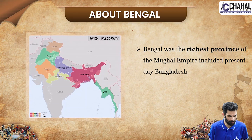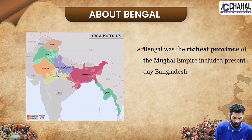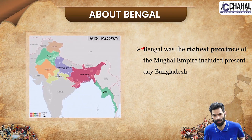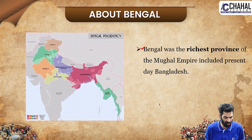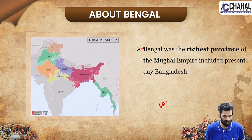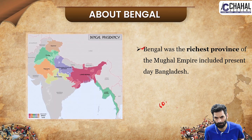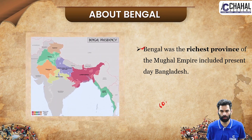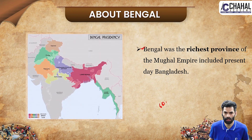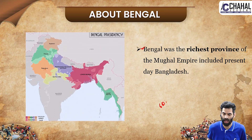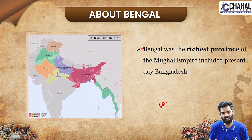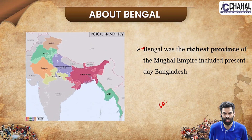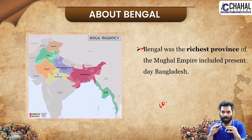Bengal was the richest province of the Mughal Empire. It was the area that provided the British Empire with about 60% of their raw materials. The East India Company was particularly focused on this region, making Bengal a very important area for them.